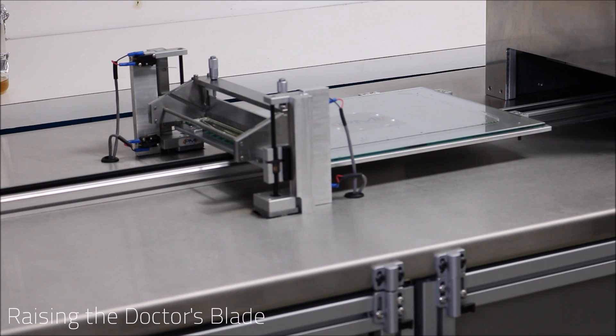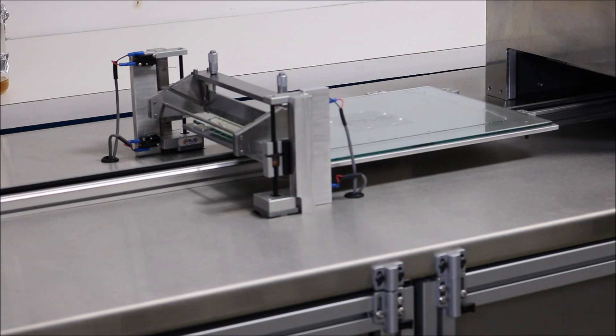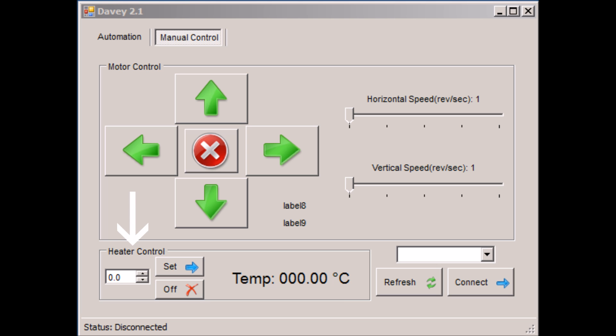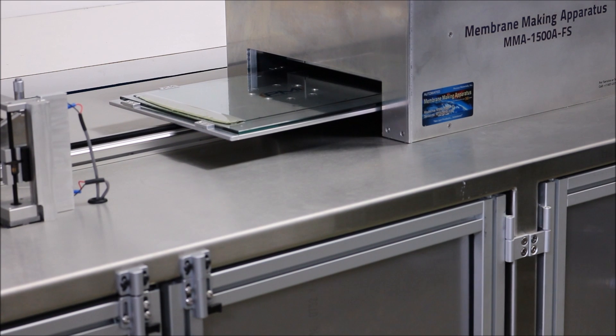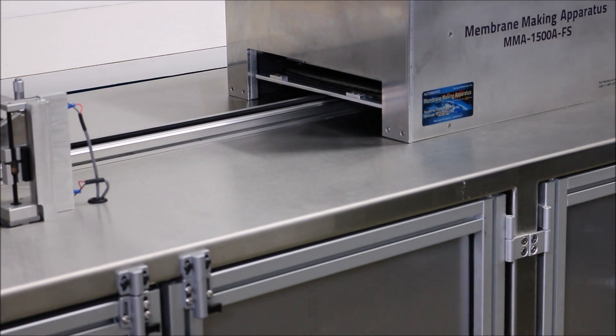After raising the doctor's blade up, we can now continue with moving the membrane casting plate into the infrared heater. You can use the heater control in the manual control panel to set and monitor the temperature of your infrared heater. After the membrane casting plate has come to a halt, allow the polymer solution to heat to your desired temperature and for your desired amount of time.